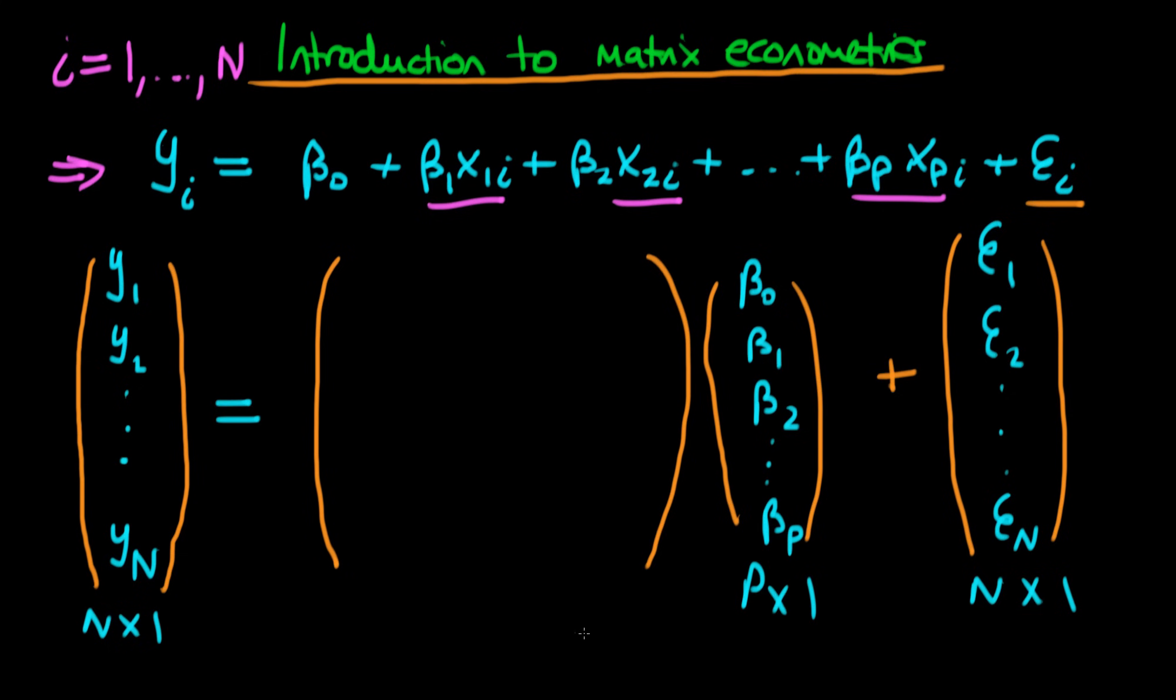So in order to make the dimensions of both sides match up, this matrix here which I haven't defined yet, better have dimensions n by p because then what we have is we have a cancelling of the inner dimensions of these matrices, and we're going to be left with an n by 1 vector left overall. So what are the inner components of this particular matrix?